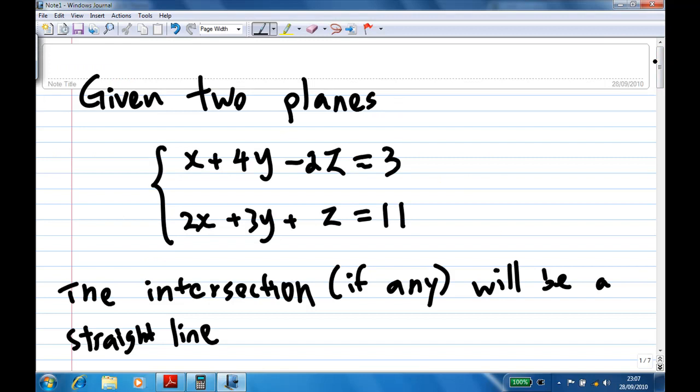To understand this question, this is actually finding the intersection of two planes. The first equation x plus 4y minus 2z equals 3 is a plane in three-dimensional space. 2x plus 3y plus z equals 11 is also a plane in three-dimensional space.